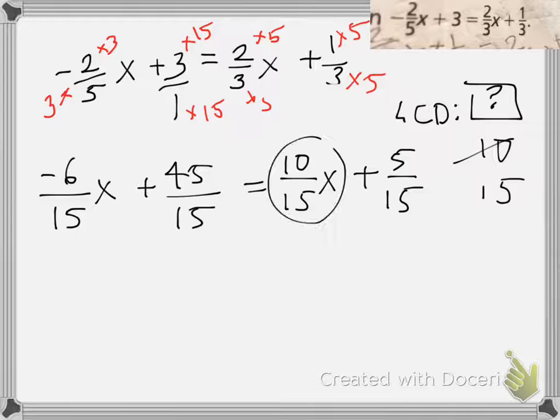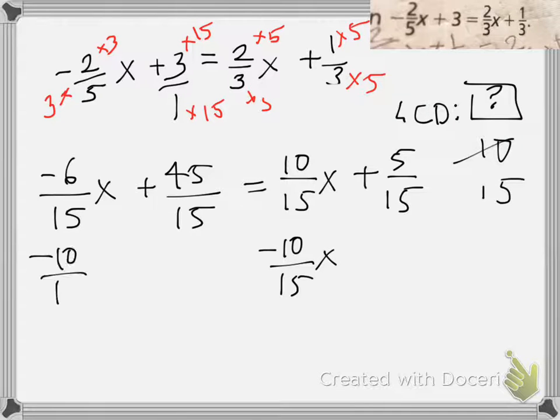Now we're going to combine like terms. This and this are like terms, and this and this are like terms. We're going to move all the variables to the left-hand side and fractions to the right-hand side. We're going to subtract 10 over 15 X from both sides. How do you subtract? Well, they're the same number, just opposite signs—one is positive, one is negative—they cancel. Then we have two fractions, both negative, so we're going to add them: negative 16 over 15 X.